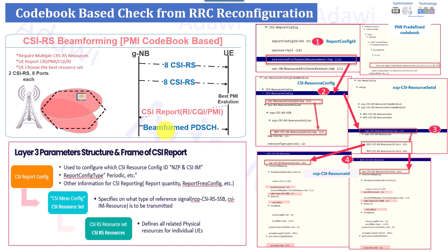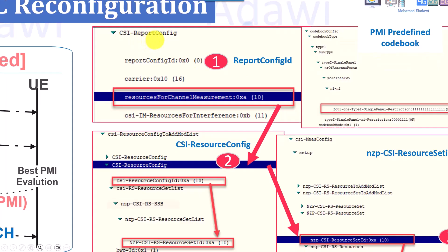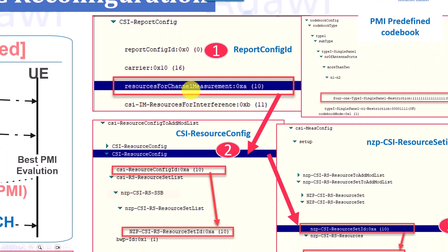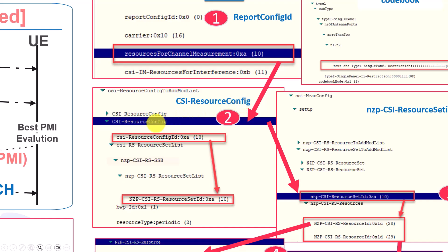To confirm whether this is the actual network configuration, check any drive test logs and go through the RRC configuration message. First, you'll find something called CSI-RS report configuration. You'll find different resource set IDs — one for channel measurement and one for CSI-IM interference management. Our focus is the resource for channel measurement, since the user measures the non-zero power CSI-RS to find the PMI reports. The report config ID in this example shows ID 10.